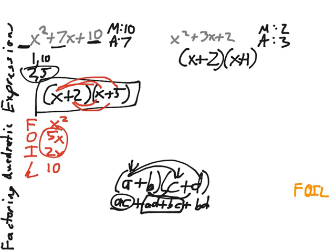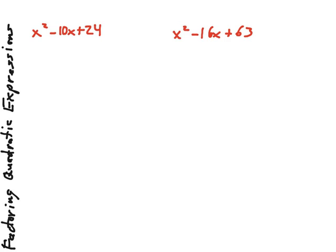This works fine when our b value is positive and our c value is positive with an a value of 1. But let's look when we start changing this up a little bit. So here, x squared minus 10x plus 24. We're looking for 2 numbers that will multiply to give us 24, and yet add to give us a negative 10. So what numbers will multiply positive and add negative? The answer is 2 negative numbers.